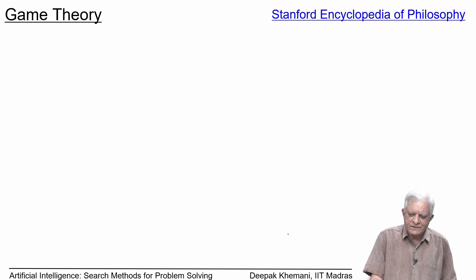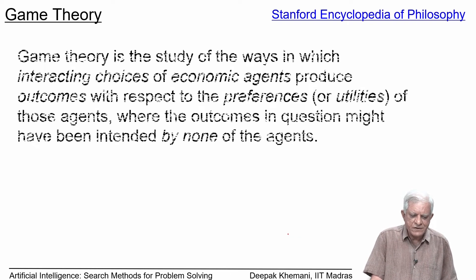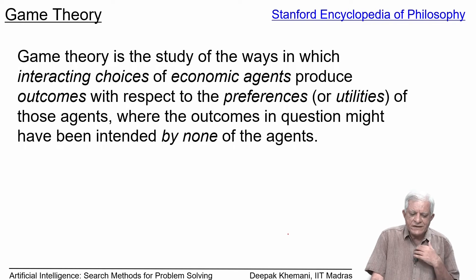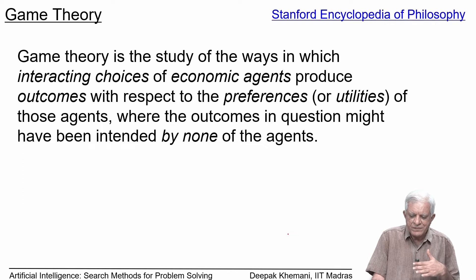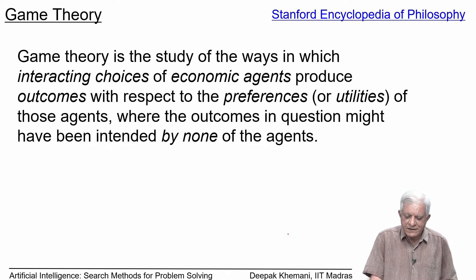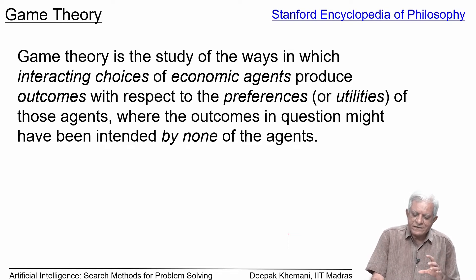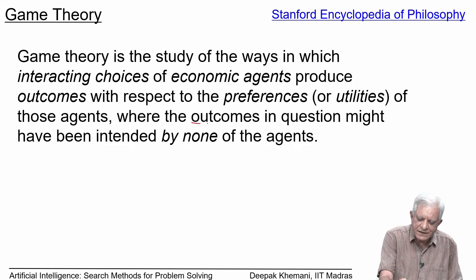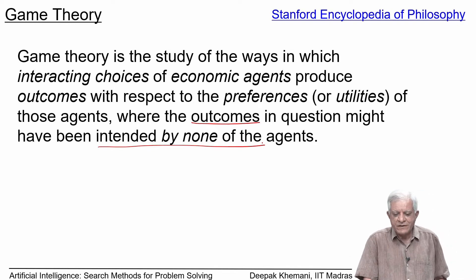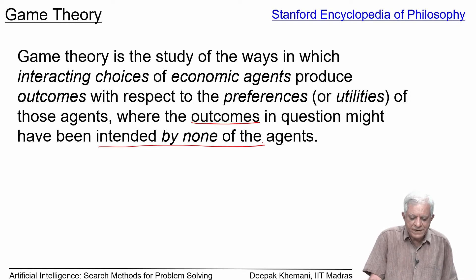Another definition of game theory, this time from the Stanford Encyclopedia of Philosophy, is the study of ways in which interacting choices of economic agents produce outcomes — with respect to the preferences or utilities of those agents — where the outcome in question might have been intended by none of the agents. This is an interesting point: the outcome that finally comes will be intended by none of the agents, and we will see the famous example of the prisoner's dilemma where this happens.